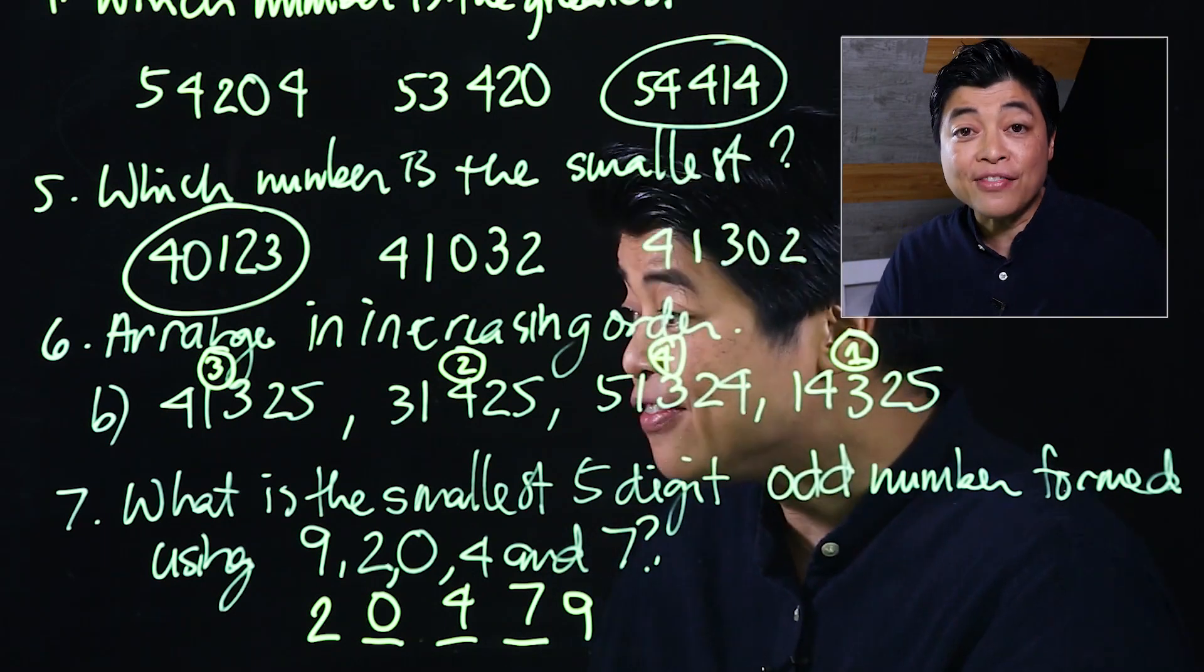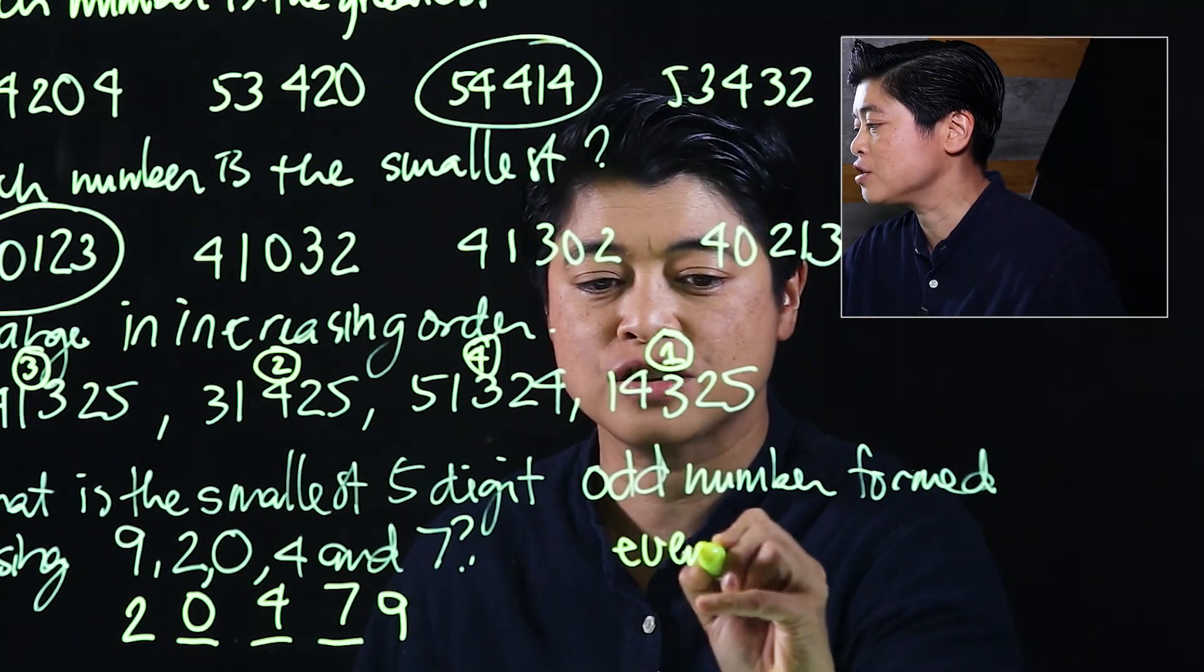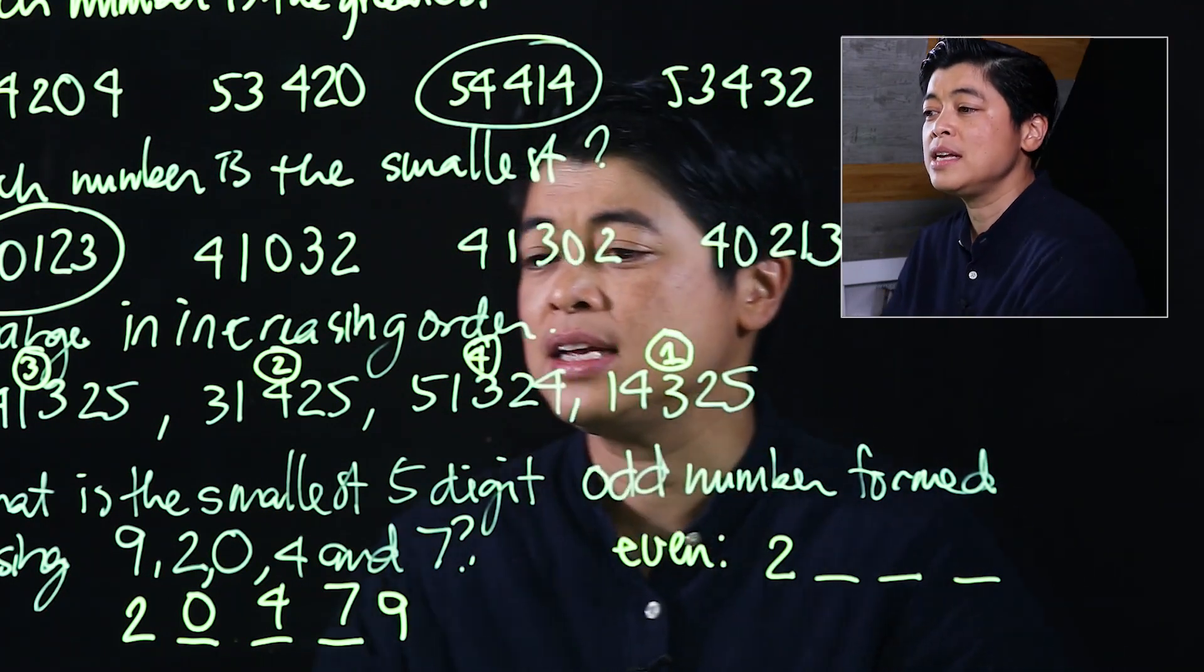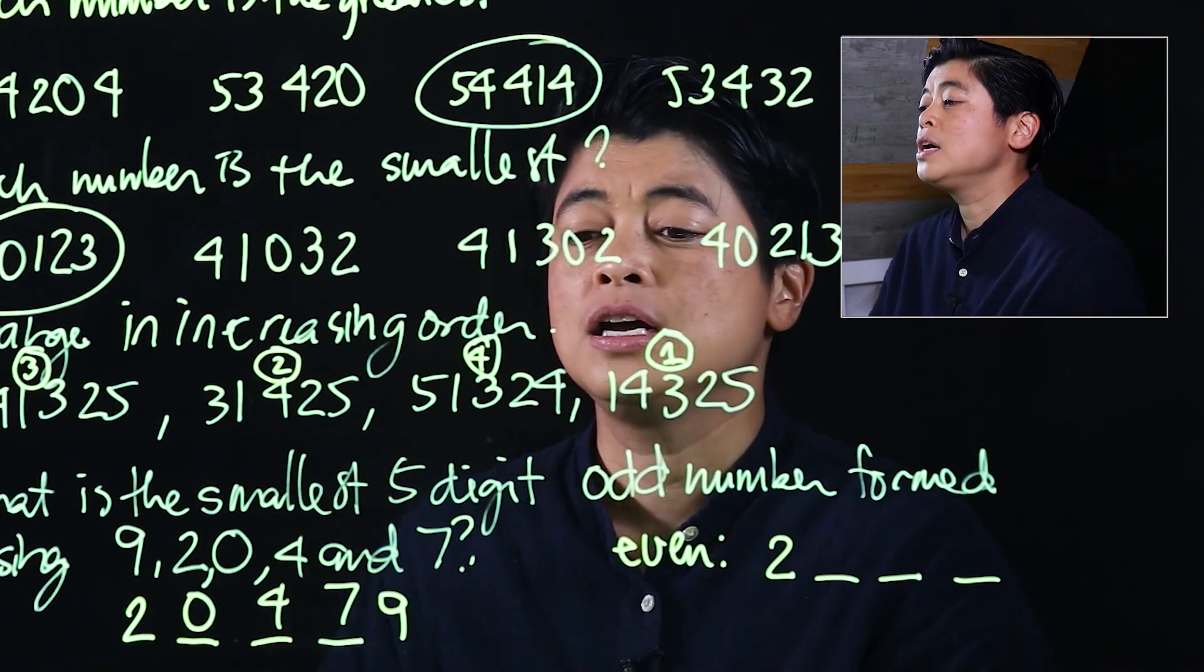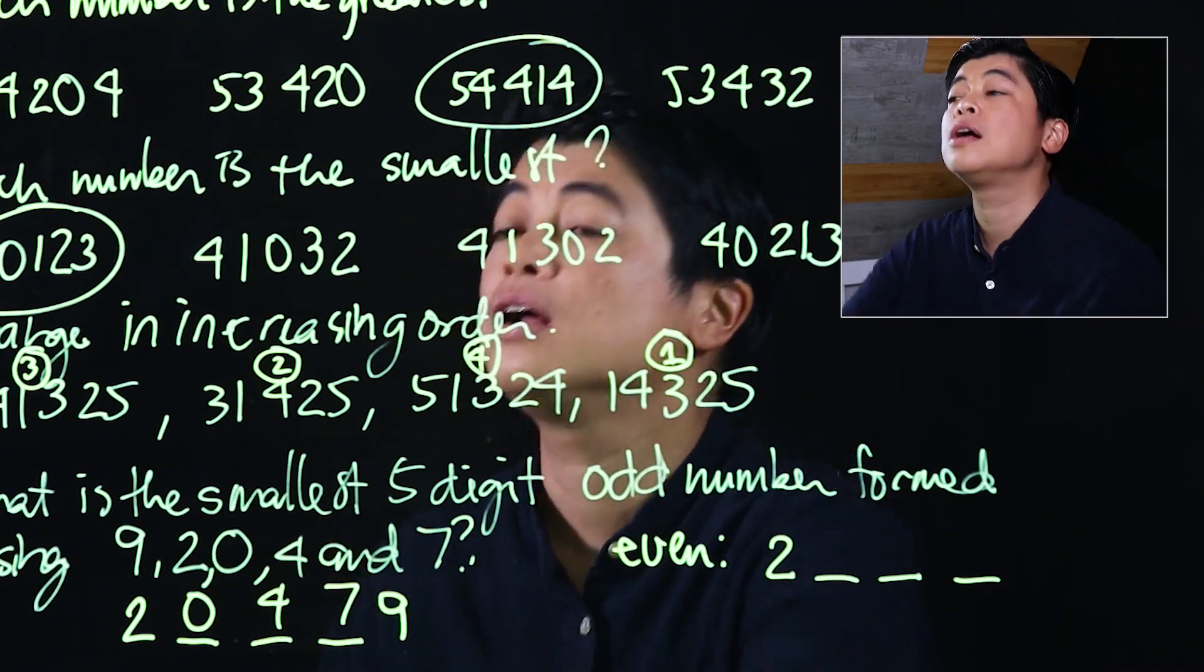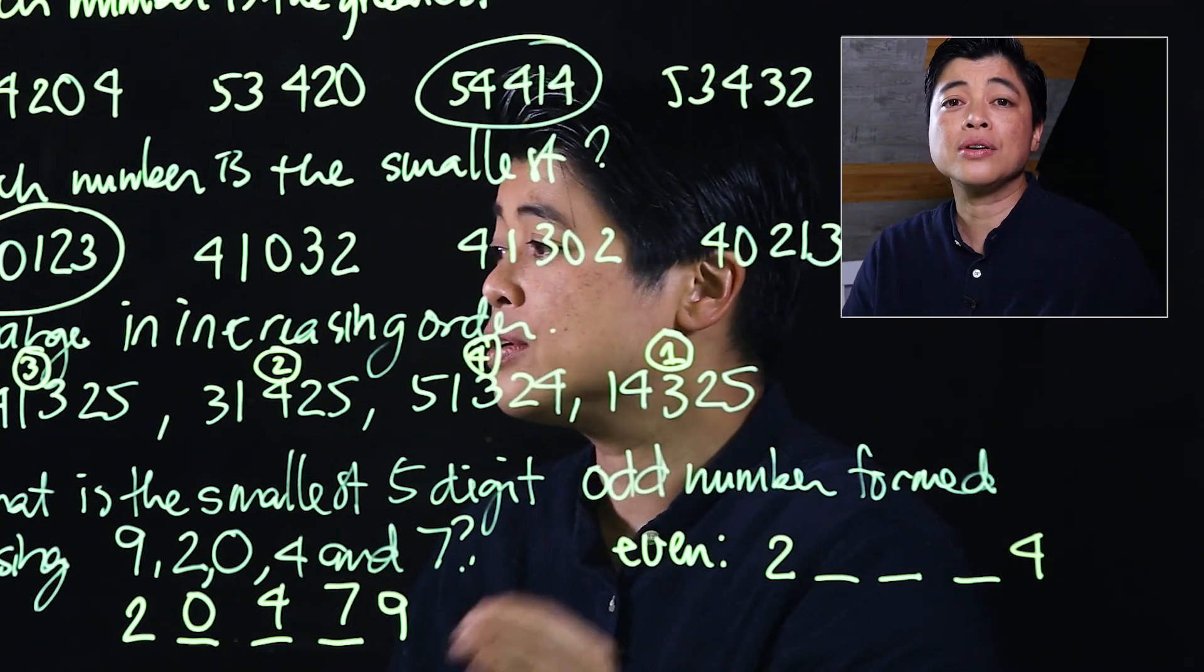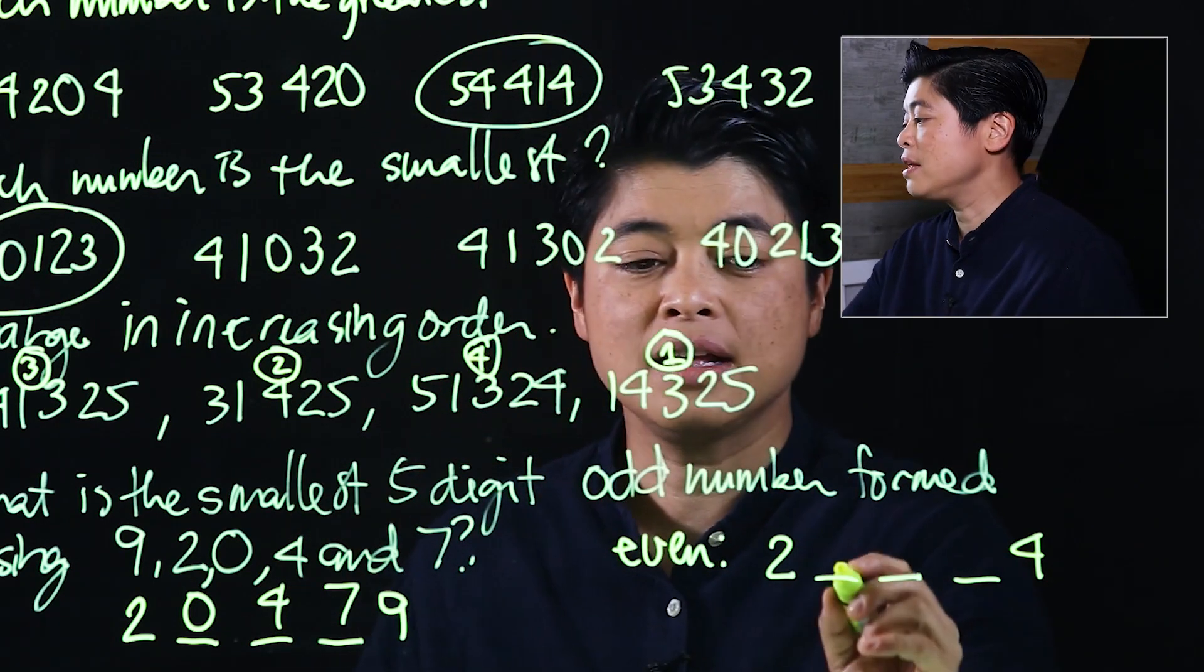However, if it says the smallest five-digit even number, that means we still start with a 2. It should end with an even, so the even choices are 2, 0, and 4. If it wants the smallest, we should end with the largest even. Among the even, the largest is 4, so that we can save the smaller numbers for the starting.